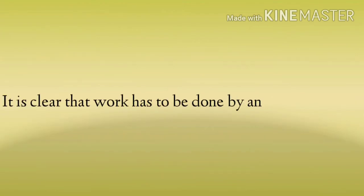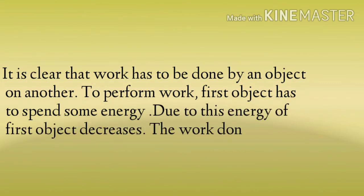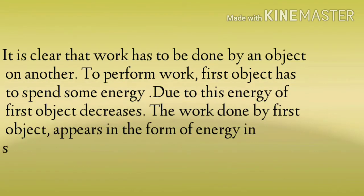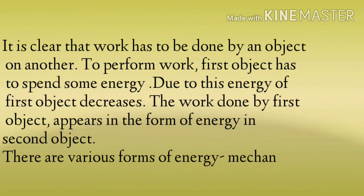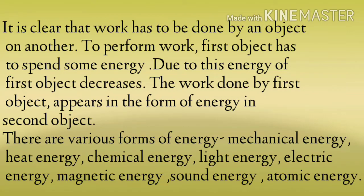It is clear that work has to be done by an object on another. To perform work, the first object has to spend some energy. कोई भी अगर work होगा तो first object अपनी energy को spend करेगा, खर्च करेगा. Due to this, energy of the first object decreases. The work done by the first object appears in the form of energy in the second object — उसमें कुछ changes आएंगे, कुछ movement होगा.